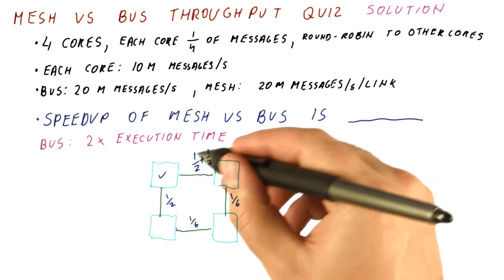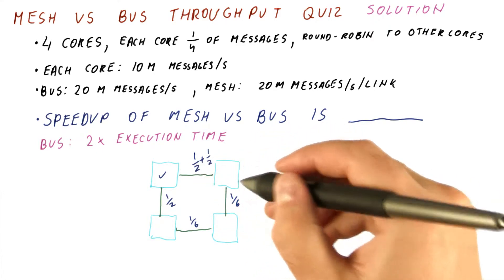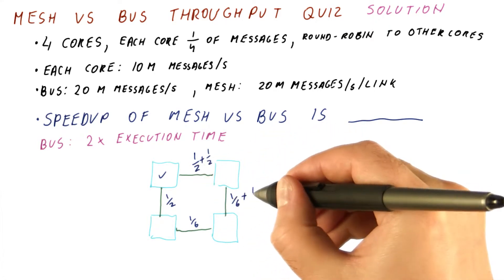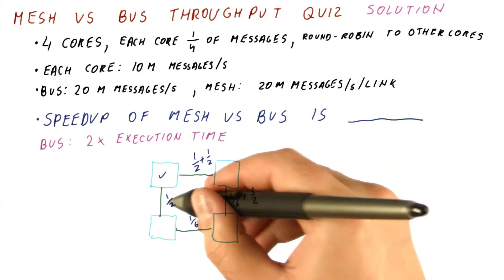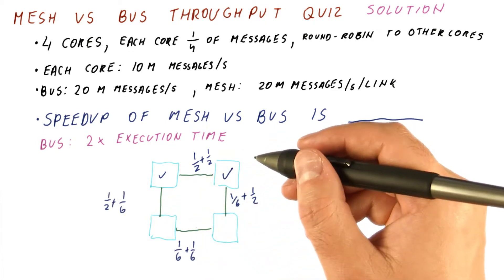So this link suffers one half of this traffic again. Now this link gets one half of the traffic from this core. And these two links get one sixth each. And now we're done with this core.